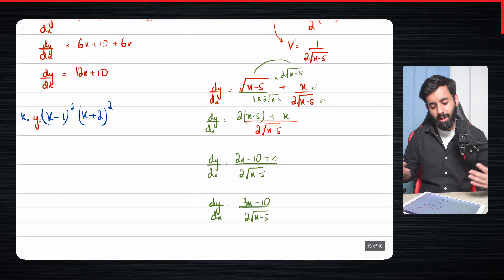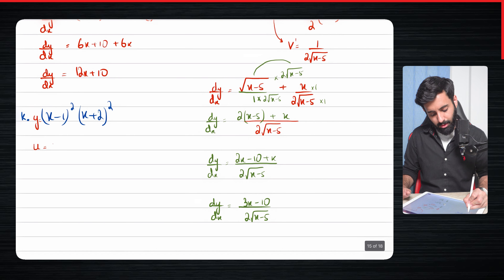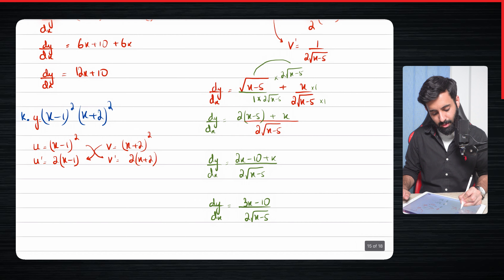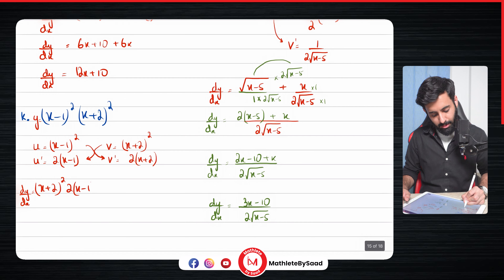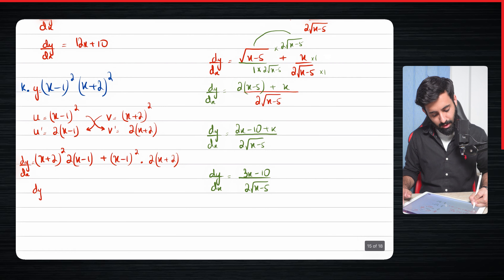Now comes part K: (x−1)² times (x+2)². You could expand and differentiate, but I wouldn't recommend it here because there'd be a lot of working. So u equals (x−1)², meaning u prime equals 2(x−1), and v equals (x+2)², meaning v prime equals 2(x+2). Then dy/dx equals v·u′ plus u·v′: (x+2)²·2(x−1) plus (x−1)²·2(x+2).